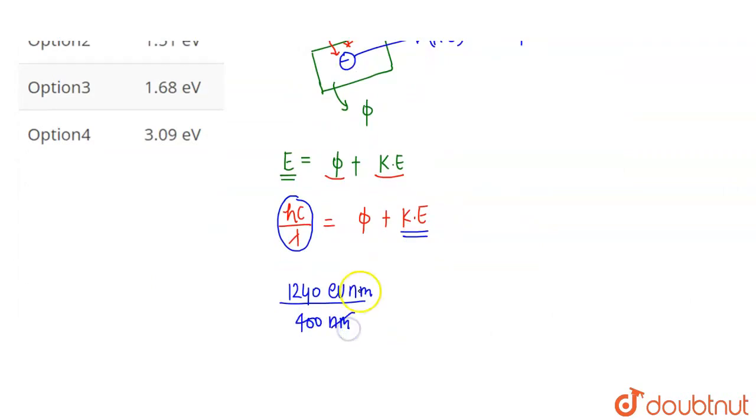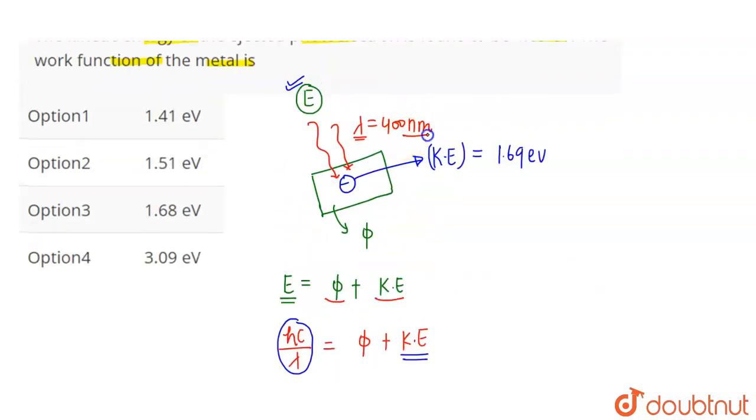Lambda value is given as 400 nanometer in the question. The nanometer units cancel, giving us 1240 divided by 400 electron volts, which equals 3.1 electron volts.